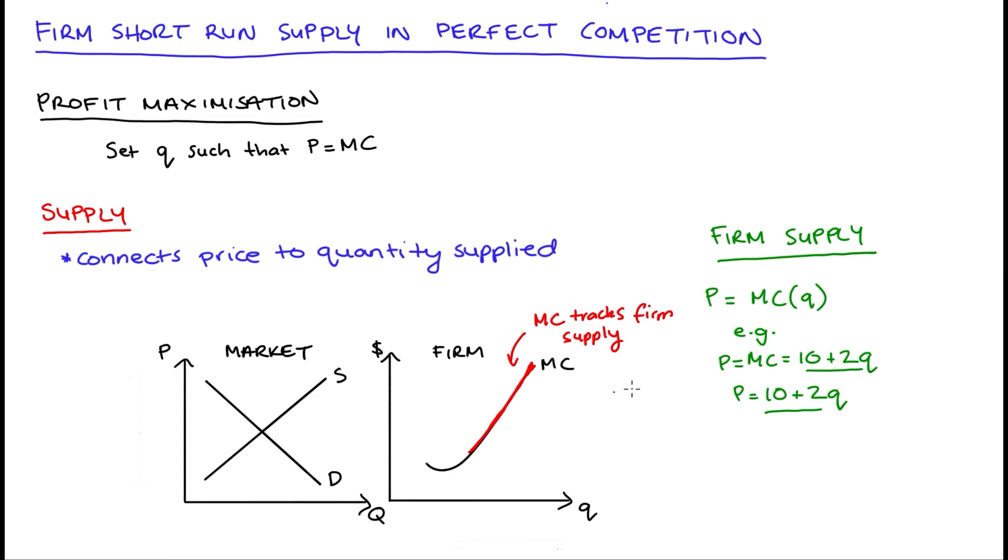This isn't quite the whole story, though. Some prices will just be too low and the firm would be better off in those cases to not produce anything. So q would be equal to zero. In particular, in the short run, the firm will not supply if price is less than average variable cost. So if p is less than AVC.